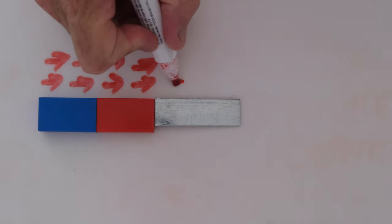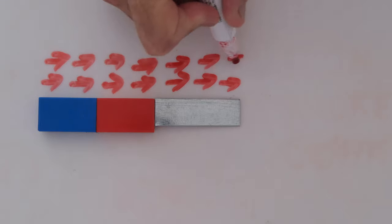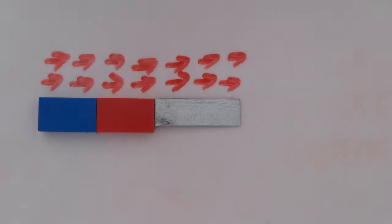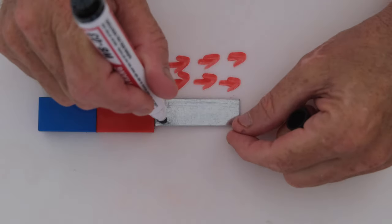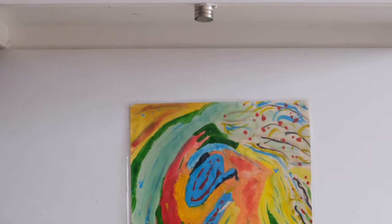Now the domains in the metal are aligned. And of course we get again here a south pole and a north pole.